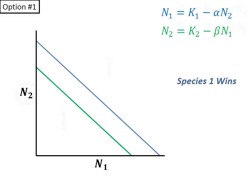When we plot both isoclines together, they can take one of four orientations. In the first option, the isoclines do not cross, and the species 1 isocline is above the species 2 isocline. In this orientation, species 1 will always win and drive species 2 to extinction. So how does this occur? Let's first consider what happens if the populations of species 1 and 2 were to be plotted somewhere in this zone.